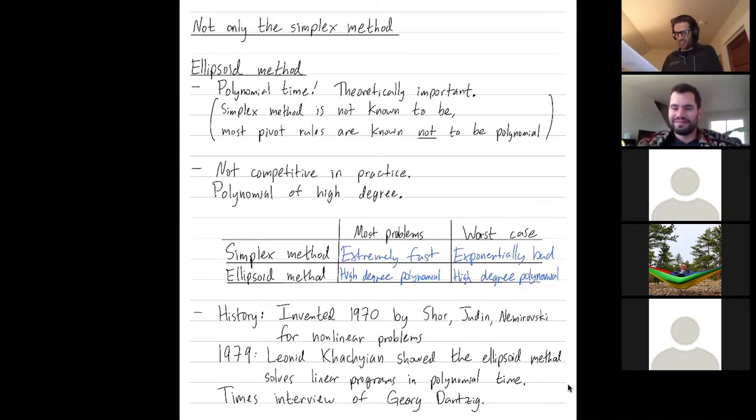And then Brown says, is the Russian method practical? And Dantzig says, no. And then Brown, the writer says, mathematicians describe the discovery as a method by which computers can find solutions to a class of very hard problems that has hitherto been attacked on a hit or miss basis.